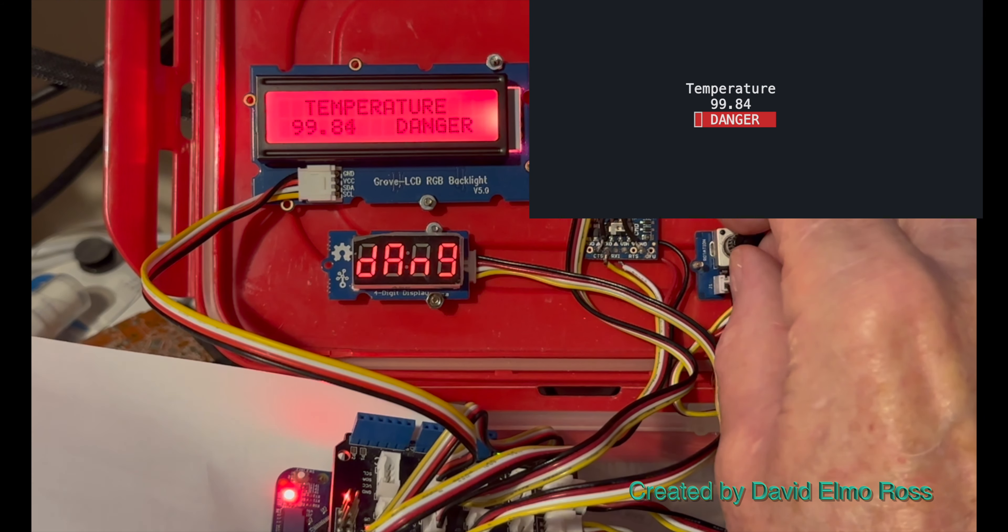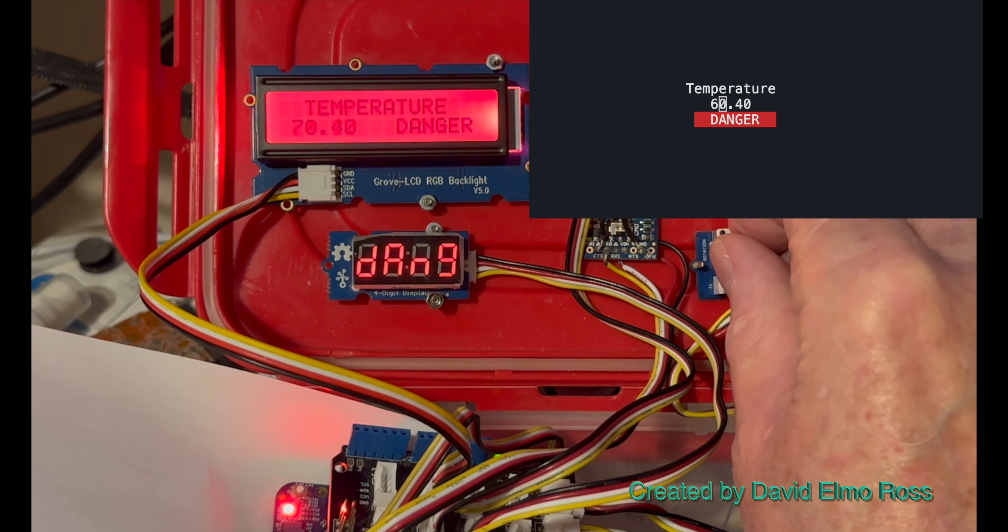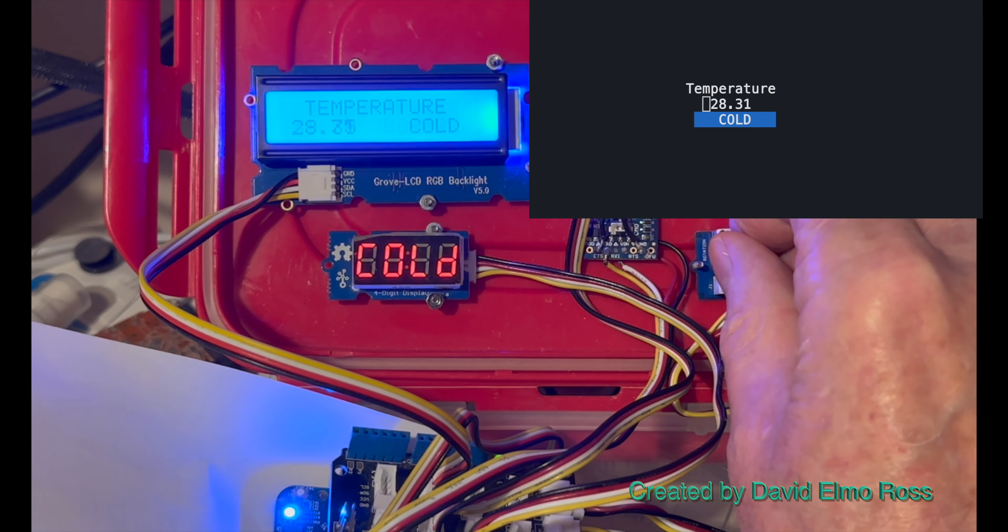So for three temperature ranges: 66 to 99, that is the danger range. When we get between 66 and 33, that's our normal operating range. And when we get below 33, that's cold.